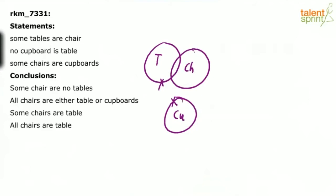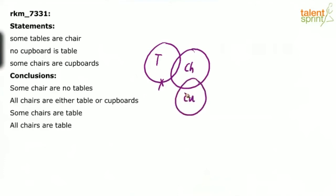Chairs and cupboards have to overlap, so we'll have to redraw this diagram. What we can simply do is overlap chairs with cupboards but ensure that cupboards do not touch tables. Some tables are chair — this overlapping; no cupboard is stable — cupboards and tables do not touch each other; and some chairs are cupboards. Tables and chairs overlap, chairs and cupboards overlap, but tables and cupboards should not overlap.